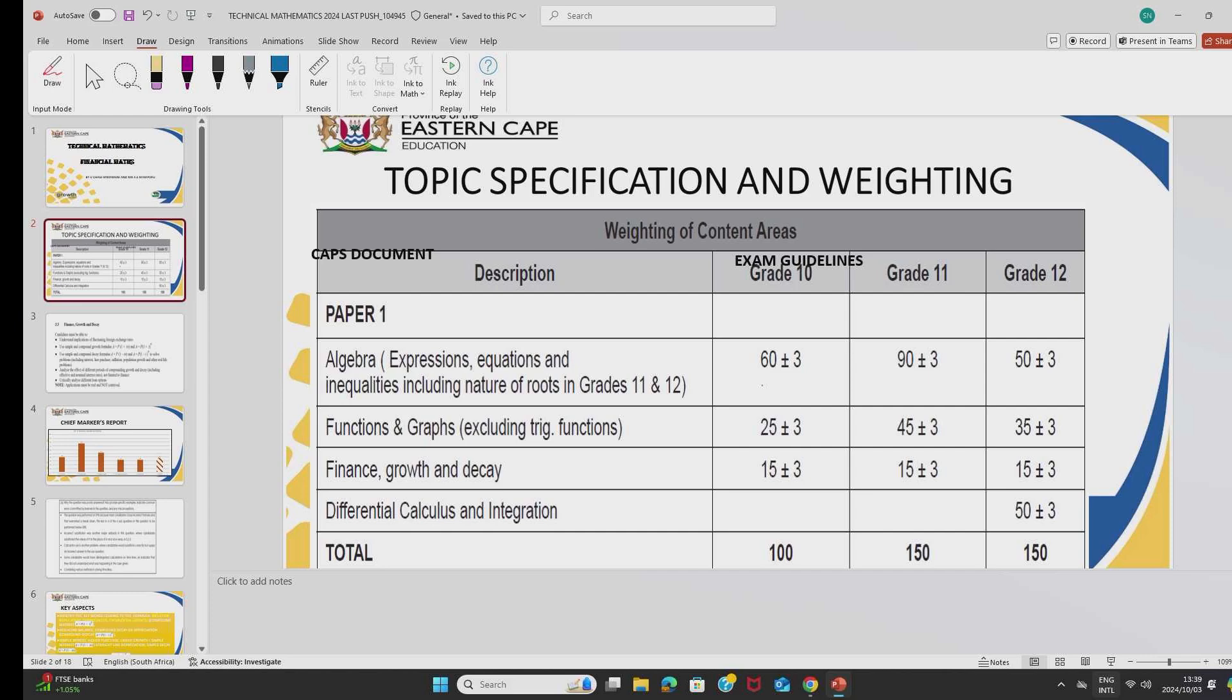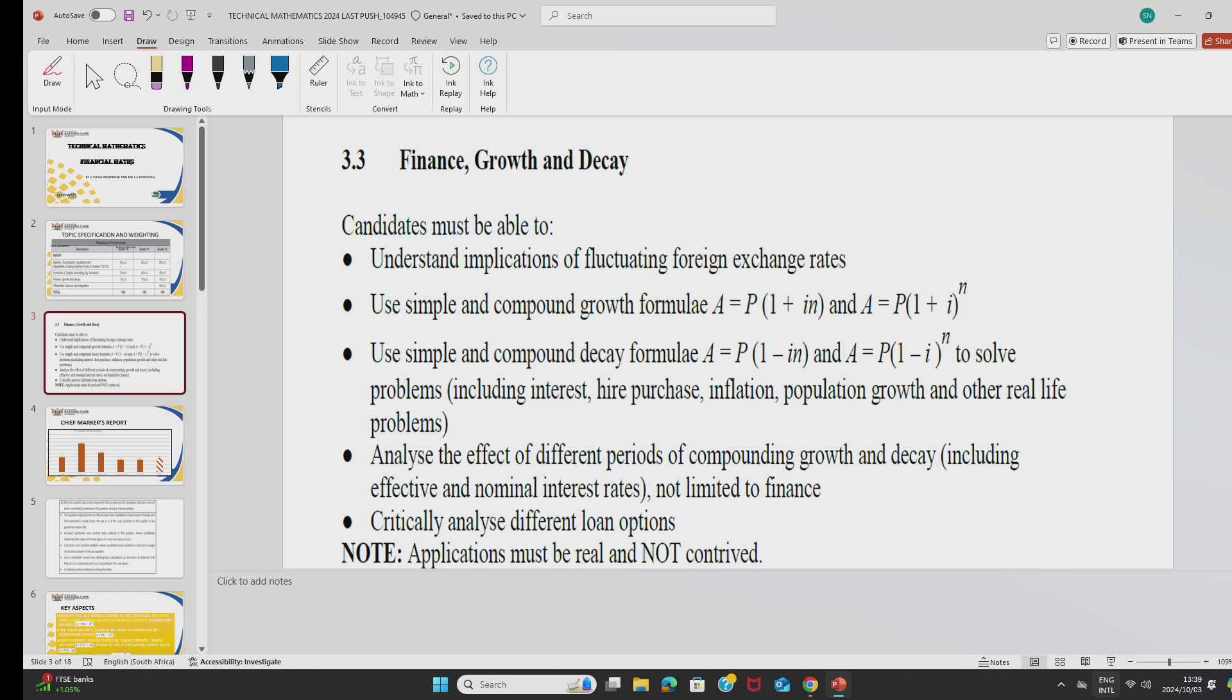This is a snip from the CAPS document and this topic weighs plus or minus 15 marks of the whole paper one out of 150. And also according to the examination guidelines, this is what you are expected to know. You are expected to know the simple interest, compound interest, compound decay and simple decay and also to be able to analyze timelines.